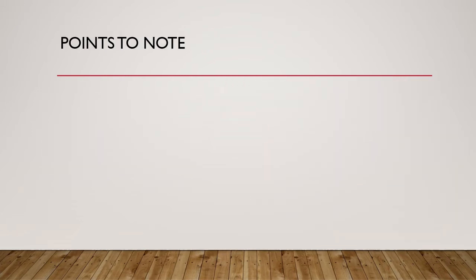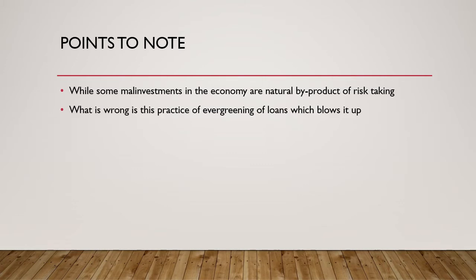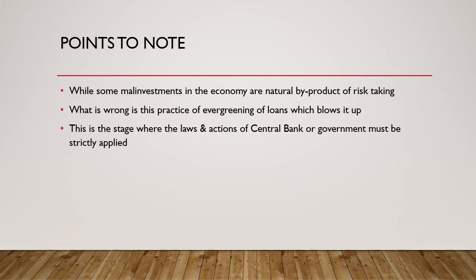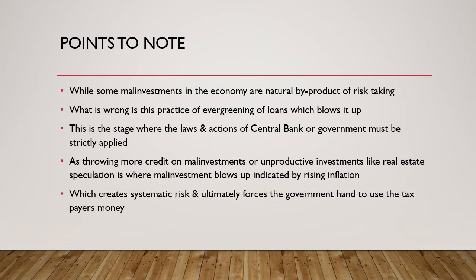Some points to note here: while some malinvestments in the economy are a natural byproduct of risk-taking — because if you take risks you are bound to make some mistakes — it's really the wrong practice of evergreening of loans that blows up these malinvestments. This is where laws should be applied strictly by the central banks and the government to stop this practice, because otherwise throwing more credit onto malinvestments or unproductive investments like real estate speculation is where these malinvestments blow up — as indicated by increasing inflation numbers — creating systematic risk in the economy, which would ultimately force the government's hand to use taxpayers' money to rescue these entities.